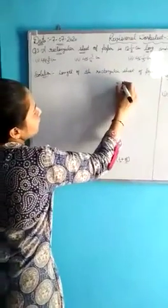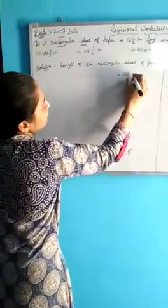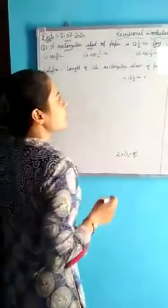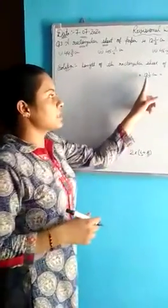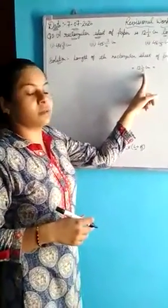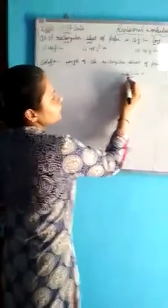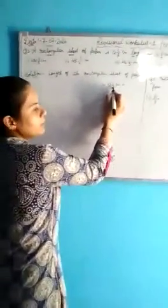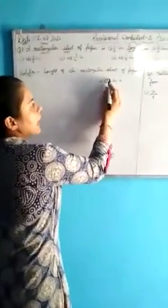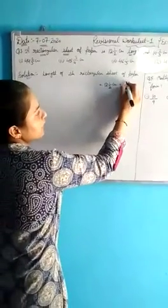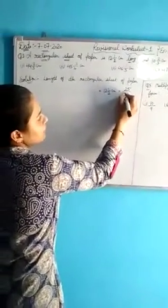The length will be 12 and 1/2 centimeters. Now convert this mixed fraction into an improper fraction. Multiply 2 by 12, which gives 24, then add the numerator 1, giving 25. So it comes to be 25/2 centimeters.